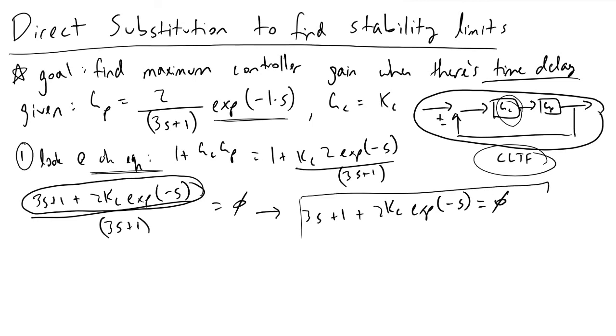What we do in direct synthesis is we're going to let s equal jω, where j is the square root of minus one.